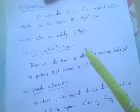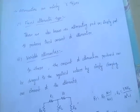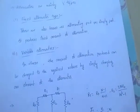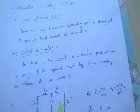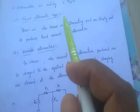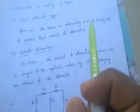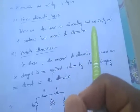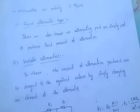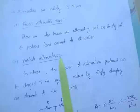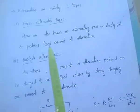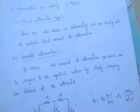Attenuators are mainly two types: fixed type attenuators and variable type attenuators. Fixed type attenuators are also known as attenuating pad or simply pad. They produce a fixed amount of attenuation.